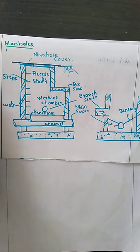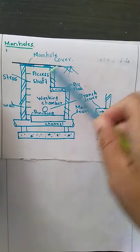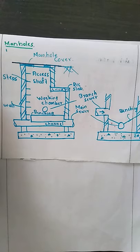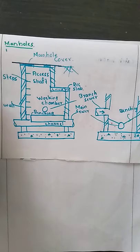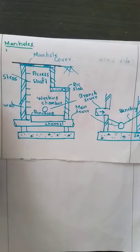The side walls are made either of burnt brick masonry or RCC. They should be structurally strong to withstand the lateral pressure. The minimum thickness of the burnt brick masonry should be around 22.5 centimeter, and the inside and outside brickwork should be plastered with cement plaster in the proportion 1:2.